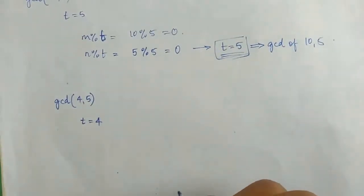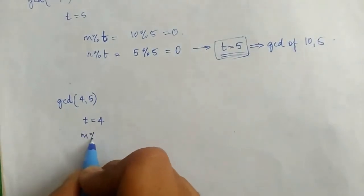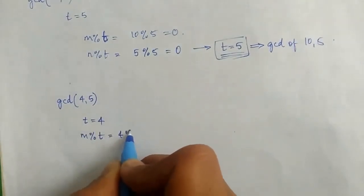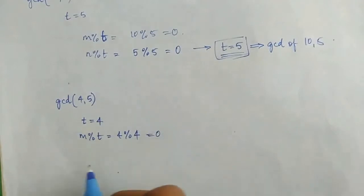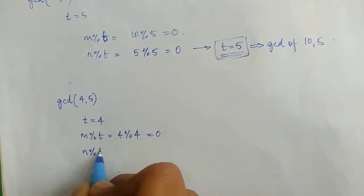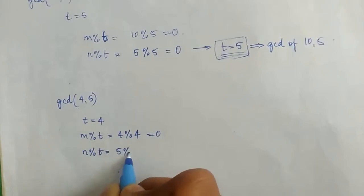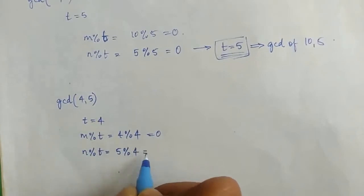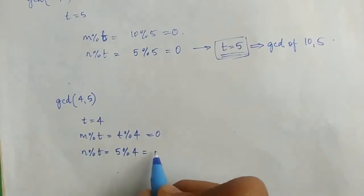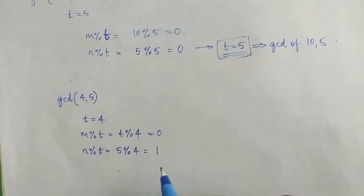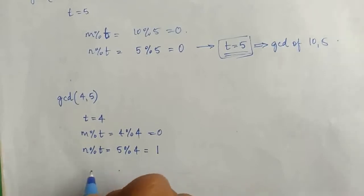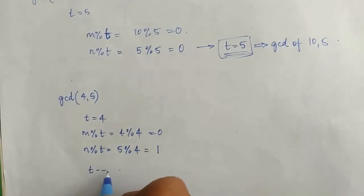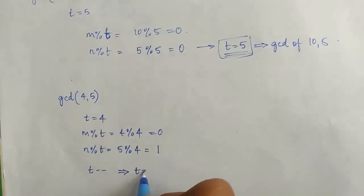In the next step we find m mod t, that is 4 mod 4, which is equal to 0, so we move on to the next step. In that step we perform n mod t: n is equal to 5, so 5 mod 4 gives 1, which is not equal to 0, so we move to the fourth step and decrement the value of t by 1. Now t becomes equal to 3.